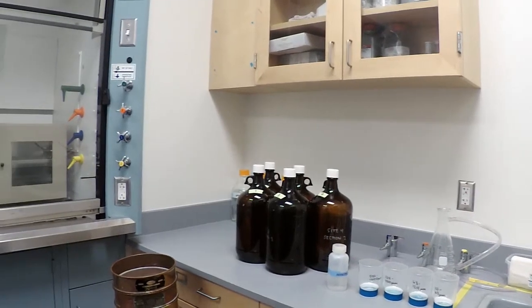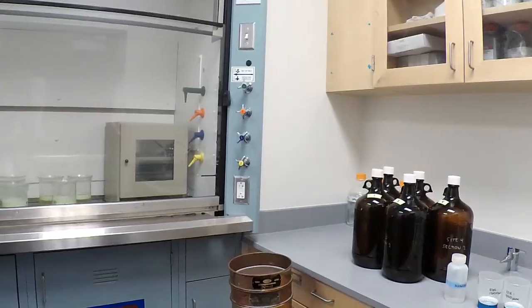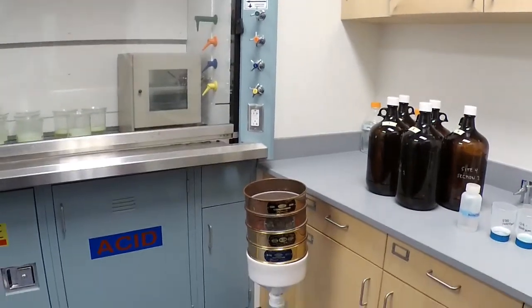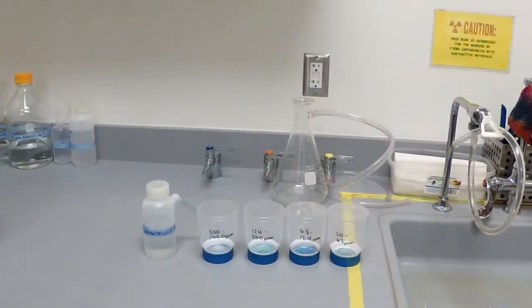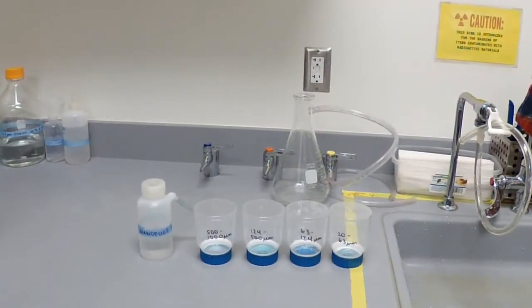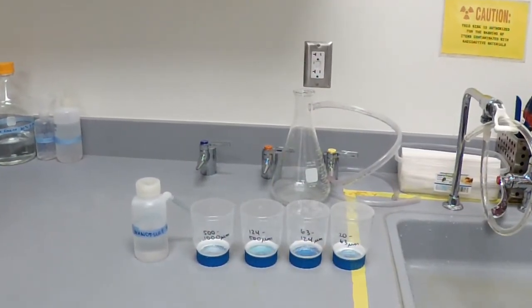To start the processing protocol, you will need to collect your 20-liter water sample stored in five 4-liter AMBRA bottles, as well as your various size stainless steel sieves. You will also need to prepare filtering units to collect the microplastics from each of your size classes.